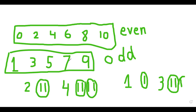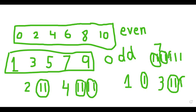Let's take seven. I draw seven lines: one, two, three, four, five, six, seven. Now make them into groups of two — one group, two groups, three groups — but there is one single line remaining. We cannot make a complete group of two, so seven is an odd number. I hope you understand: even numbers means you can make complete groups of two.